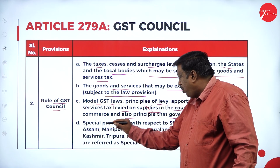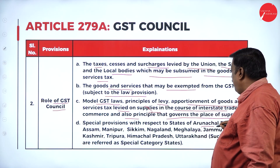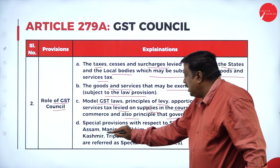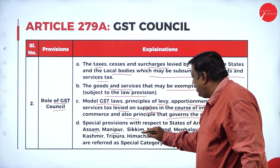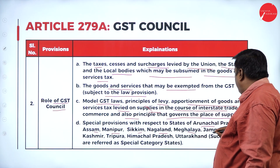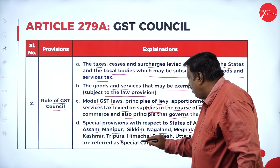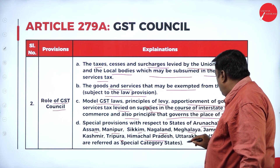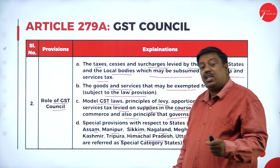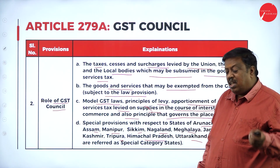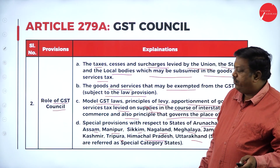Special provisions are given in respect of the states of Arunachal Pradesh, Assam, Manipur, Sikkim, Nagaland, Meghalaya, Jammu and Kashmir, Tripura, Himachal Pradesh, and Uttarakhand. Such states are referred to as special category states under the GST Council concept.